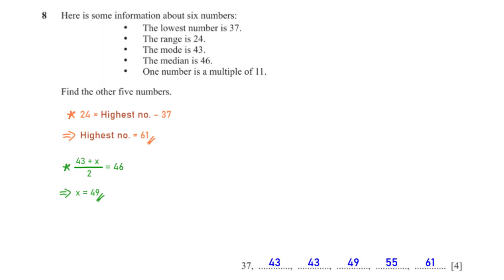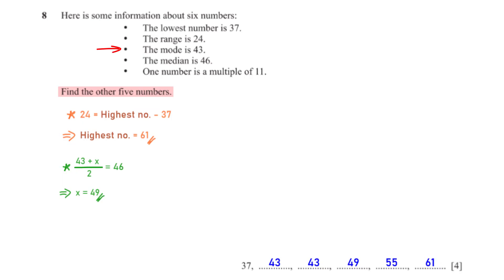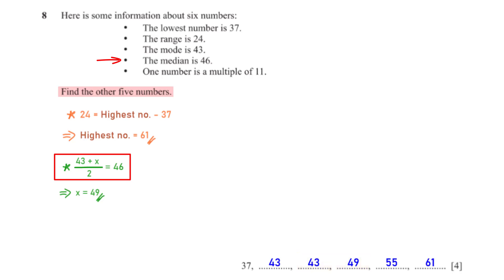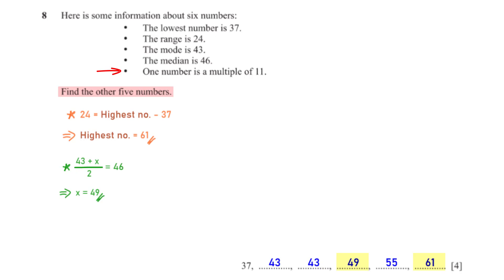Here is some information about six numbers. The lowest number is 37. The range is 24, meaning 24 equals the highest number minus 37, so the highest number is 61. The mode is 43, meaning 43 appears more than once. The median is 46, so (43 + x) / 2 = 46, giving x = 49. One number is a multiple of 11 between 49 and 61, which is 55.